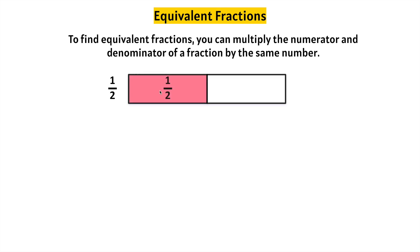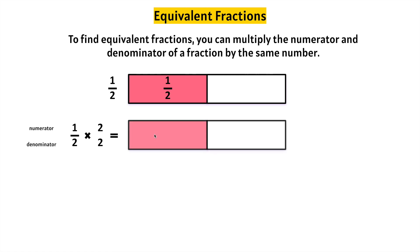One-half. Here is a model of a half. Let's find equivalent fractions to one-half by multiplying the numerator and the denominator by the same number. Let's try times two and create a model. We have a half, and let's multiply by two — two times as many. Let's count: one, two, three, four. The denominator will be four.